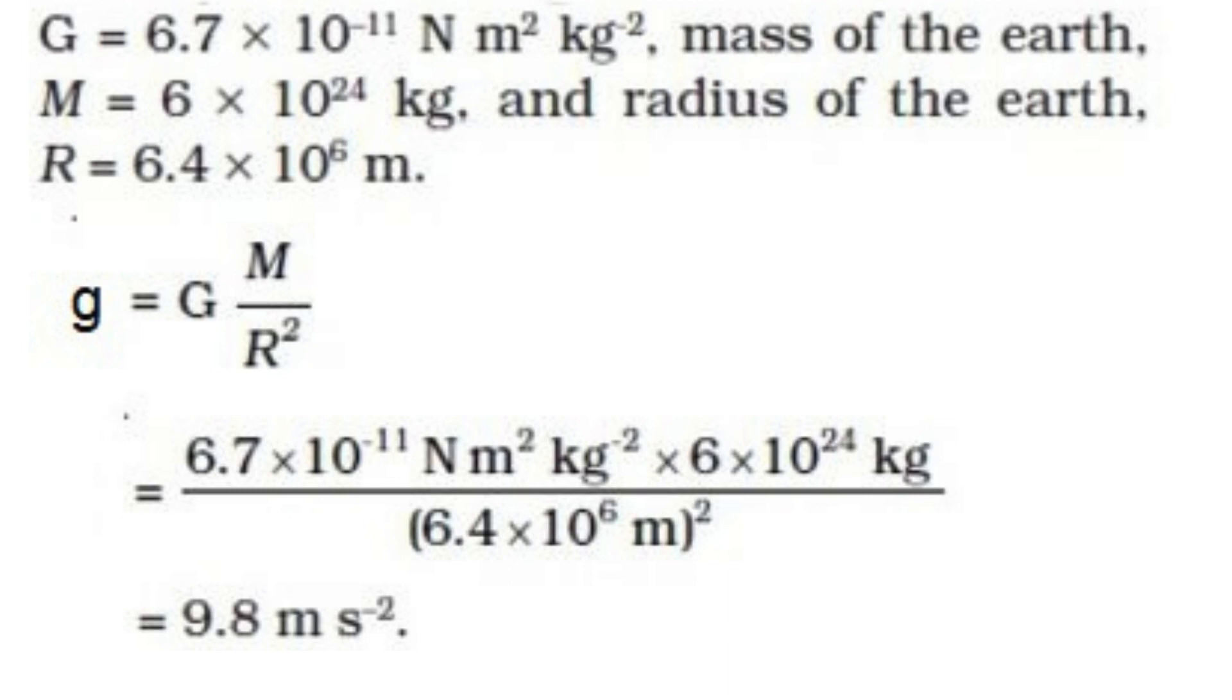Capital M is the celestial body's mass, for example, Earth. R is the celestial body's radius.